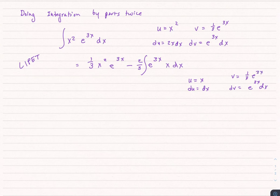So now I got all of this together minus, and we're going to put the 2 thirds, and then brackets, because all of this is going to be x times 1 third e to the 3x minus the integral of e to the 3x dx.